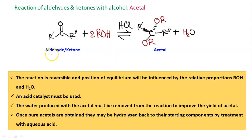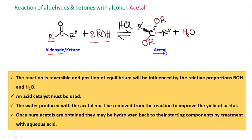Here we have the general structure for an aldehyde or ketone. If one of the R groups — R prime or R double prime — is hydrogen, then it will be an aldehyde. We take one molecule of the carbonyl compound and two molecules of alcohol. In the presence of acid HCl (or any other acid), there is formation of this acetal — a compound where two OR groups are coming from the alcohol, which is clear from the color.